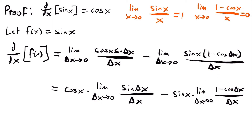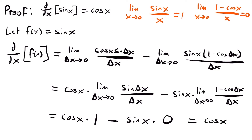Substituting these results, we have cosine x times 1 minus sine x times 0. Since anything times 0 is 0, and cosine x times 1 is just cosine x, this simplifies to cosine x. We've just proved that the derivative of sine x is equal to cosine x — so now you know where that rule comes from.